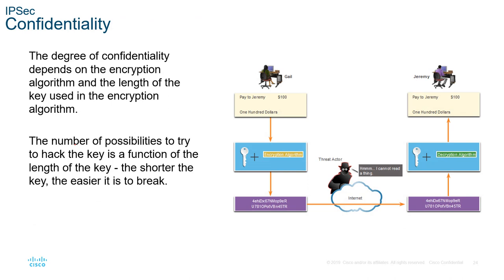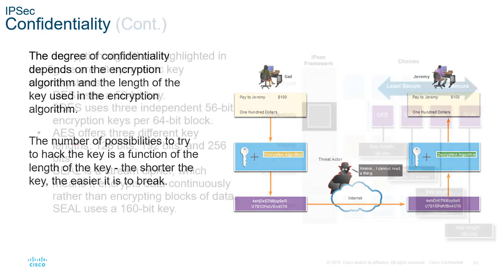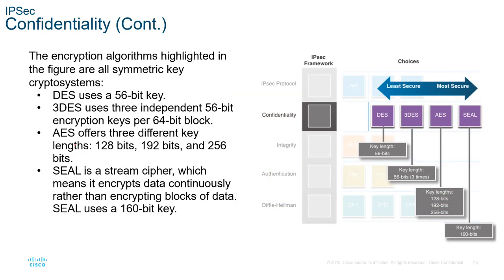Confidentiality is the level of encryption used, and the degree of confidentiality depends on the encryption algorithm and key length. Weak keys like DES and 3DES should not be used. We should be using things like AES or SEAL. AES offers 128-bit, 192-bit, and 256-bit key sizes; SEAL has around 160-bit base keys.